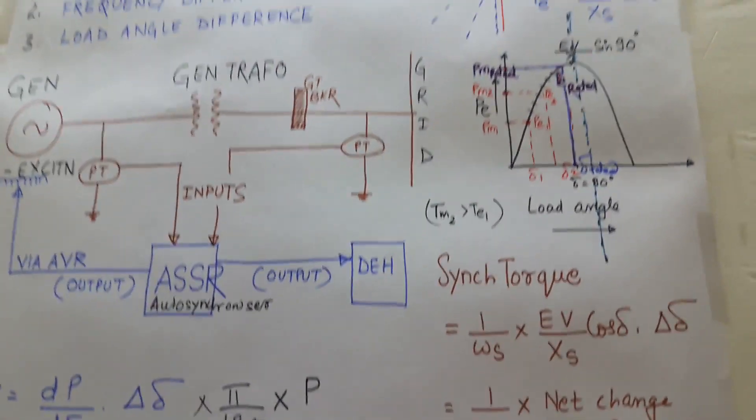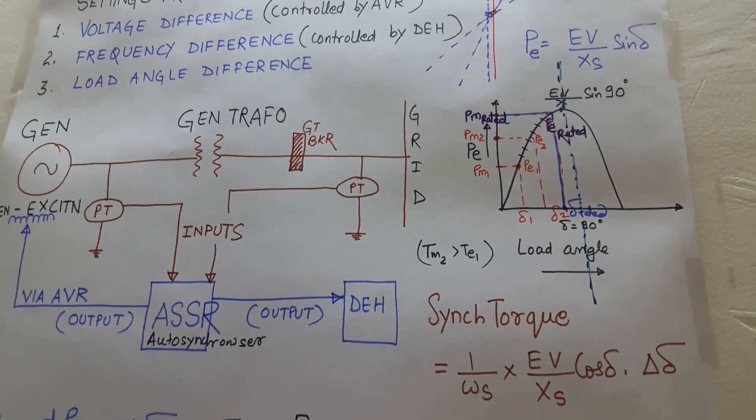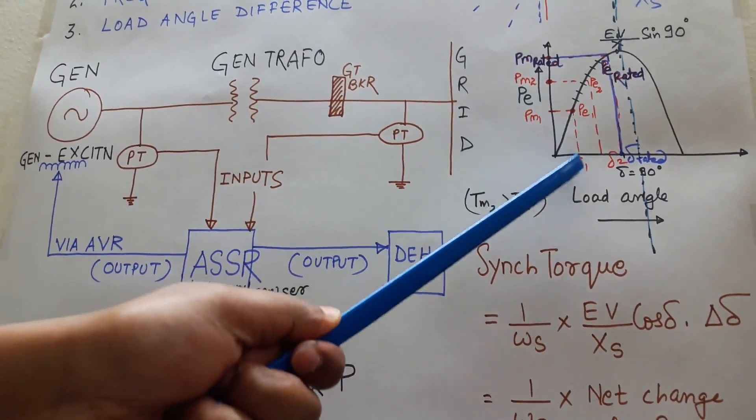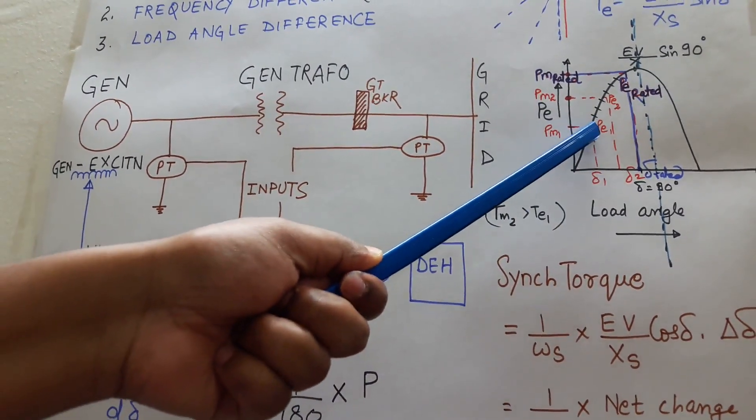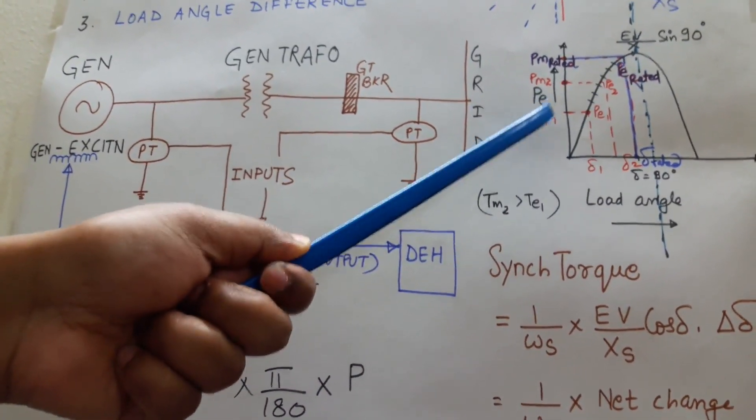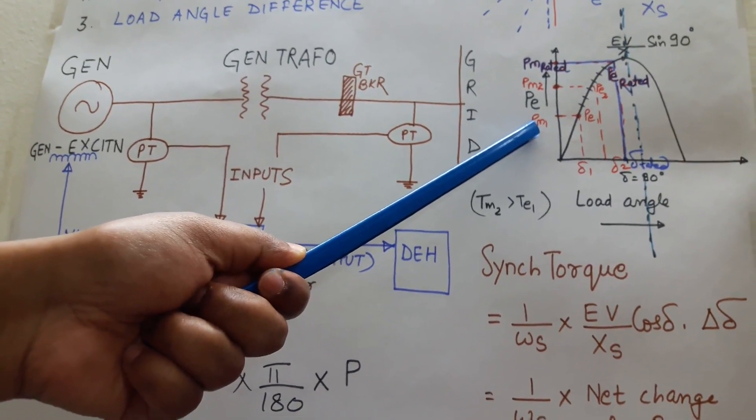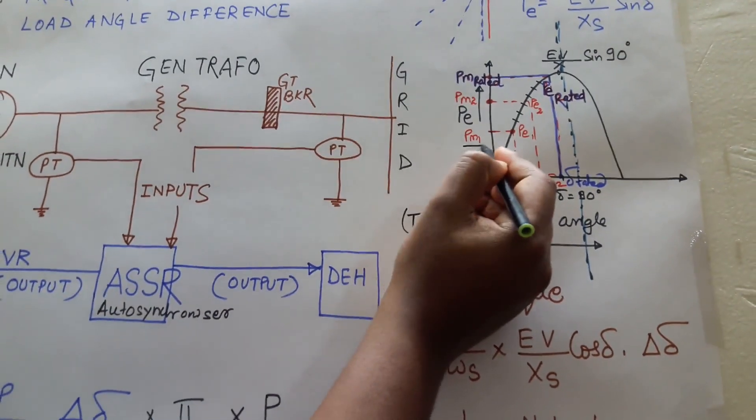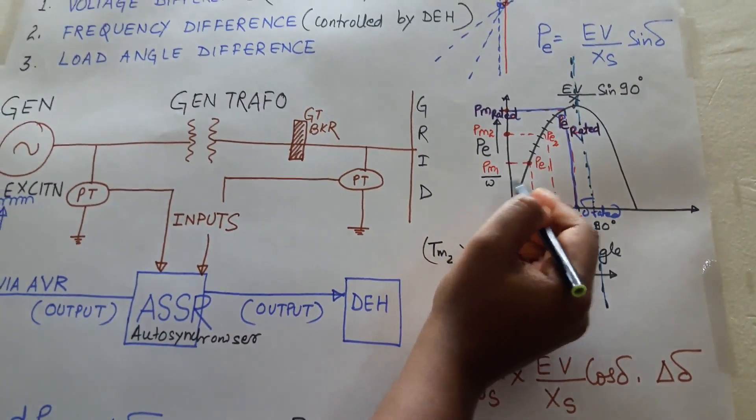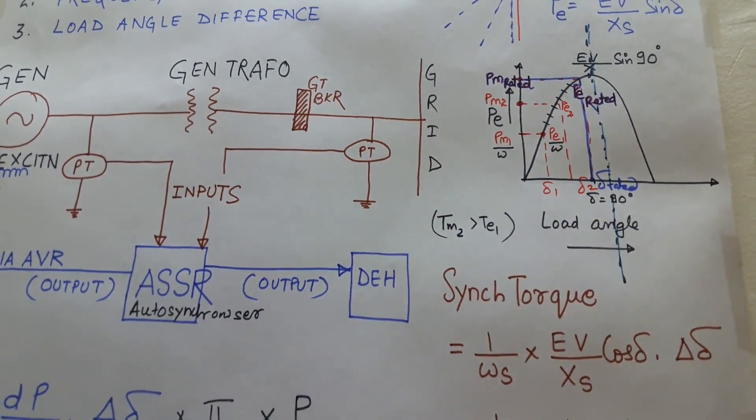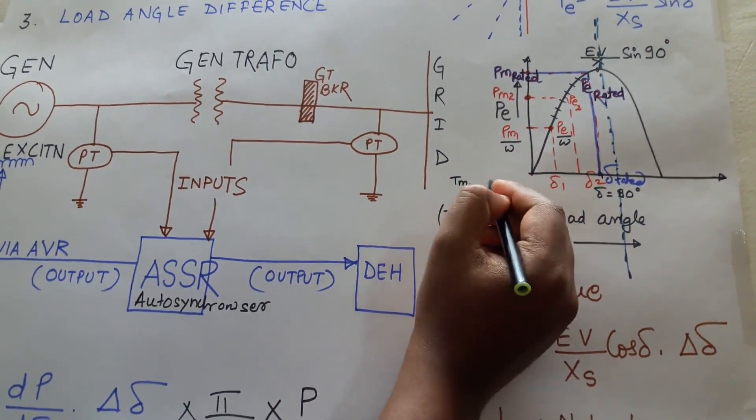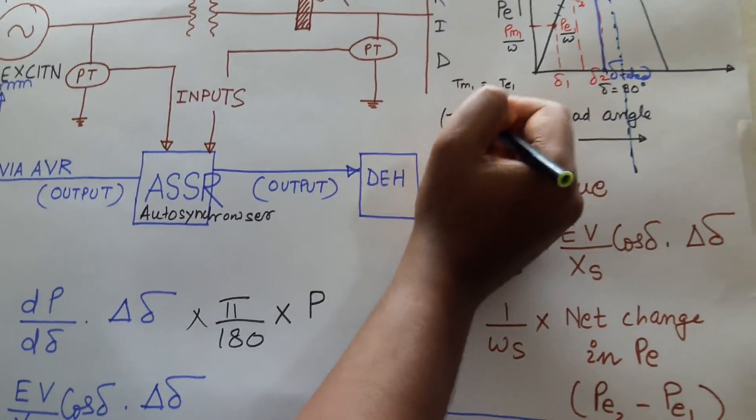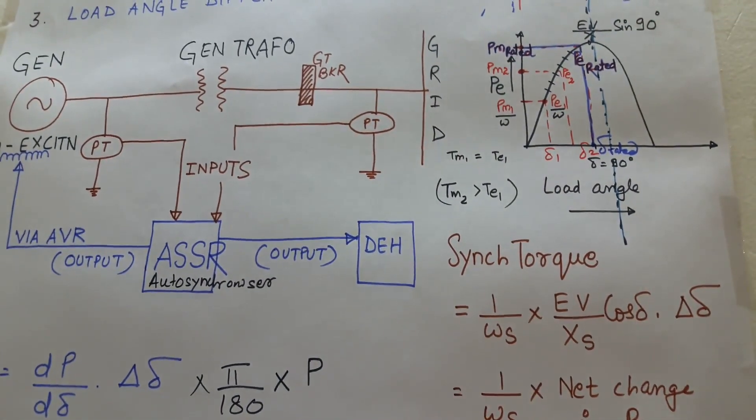So let me derive the synchronizing torque from here. Suppose at this point number one, my load angle was delta one, electrical power was PE one, and mechanical input at generator was PM1. So if I will divide this PM1 by omega angular speed and PE by omega angular speed, I will get TM1 and TE1. So TM1 is equal to TE1, so there is no acceleration.